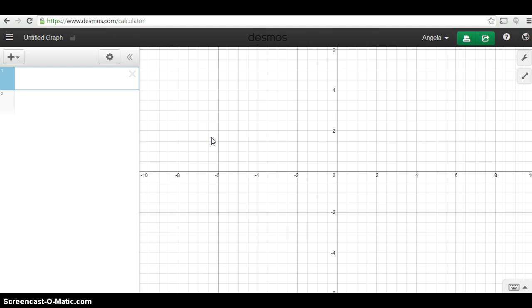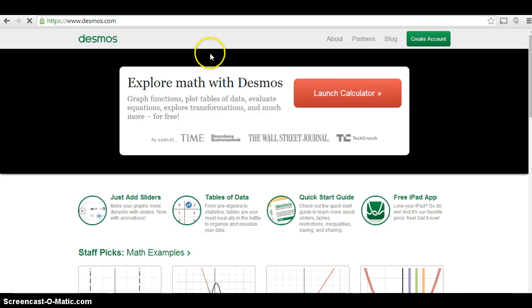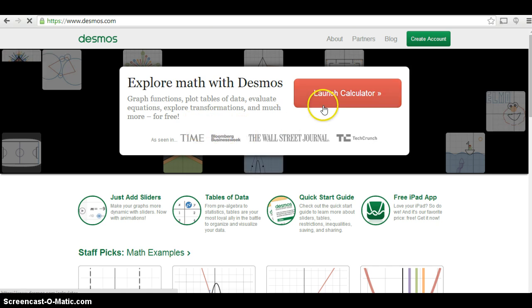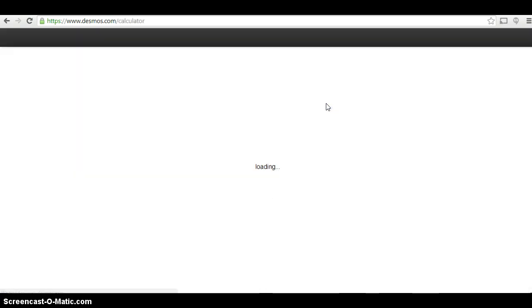The really great thing about Desmos Graphing Calculator is you don't actually have to install anything for it. Basically all you need to do is go to www.desmos.com/calculator, or if you can't remember it that long, just go to desmos.com. You'll be taken to this page and it says Launch Calculator, so just press that.